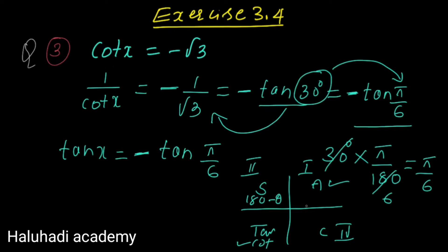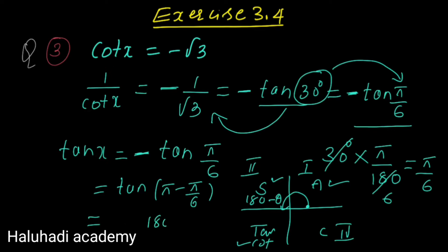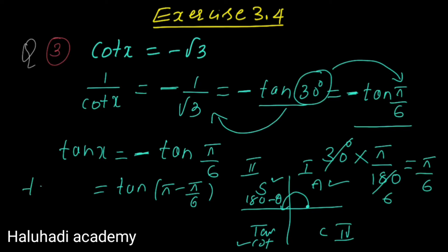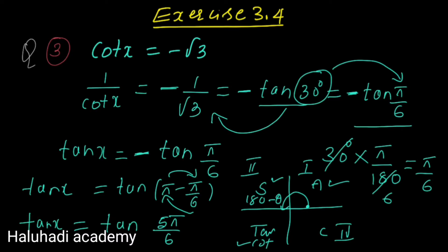In the second quadrant, the angle formula is 180 minus theta. So we write tan(pi minus theta) where theta equals pi by 6. Therefore: pi minus pi by 6, which simplifies with denominator 6 giving us 6pi minus pi equals 5pi, so the first principal value is 5pi by 6.